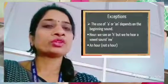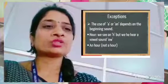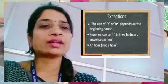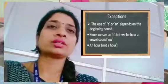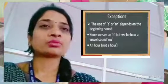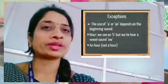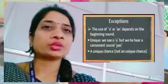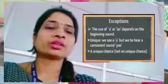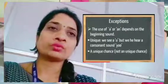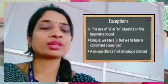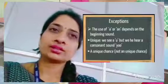For example, take the word 'hour' — H-O-U-R. We see an 'H' but we hear the vowel sound 'ow,' so here we write 'an hour' instead of 'a hour.' We say 'an hour' because the sound we hear is a vowel. Now the next example is 'unique' — here we hear the consonant sound 'yu,' so we use 'a unique dance.'